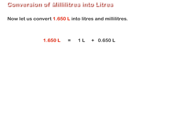We write 1.650 litres as 1 litre plus 0.650 litres. This is further equal to 1 litre plus 0.650 multiplied by 1000 milliliters. So 1 litre plus 650 milliliters, or 1 litre 650 milliliters.